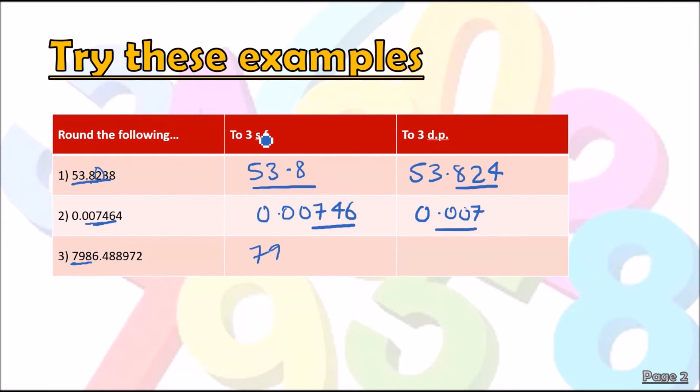Lastly, three DP. So again, look at the first three decimal places. The decider is nine. It's bigger than five, hence we copy the whole thing out: 7986.48, and we round 488 to 489. That's it.